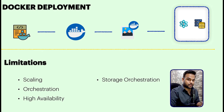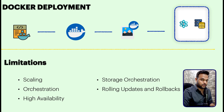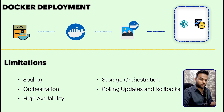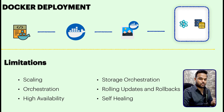Next is storage orchestration — with Docker we have volumes, but sometimes we need external resources like EFS, which we won't be able to do with a plain Docker deployment. Then there are rolling updates and rollbacks — if your application is running unhealthy or has bugs and you want to revert to a previous version, you need to create the Docker image again, push the changes, update your code, rebuild the image, and run it again, which is very tedious. Finally, self-healing requires you to manually check if all containers are running healthy and restart them yourself.